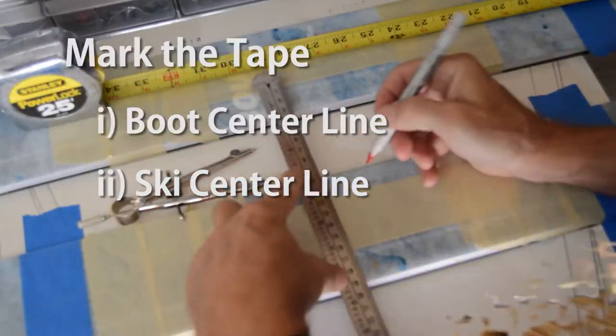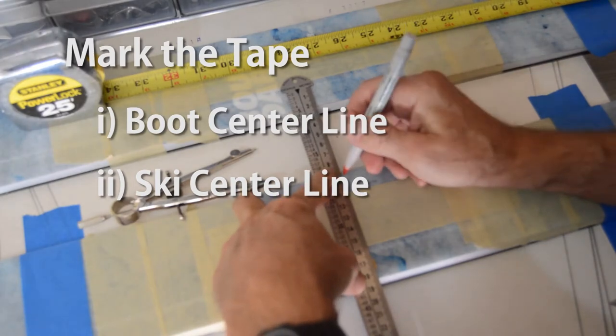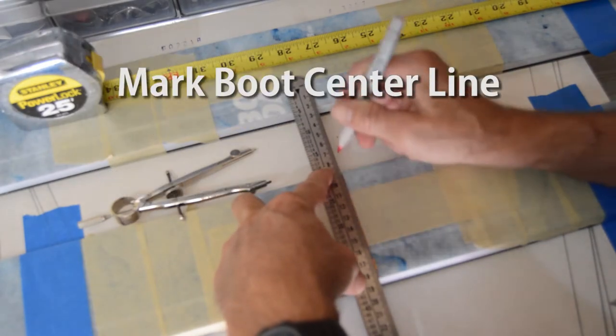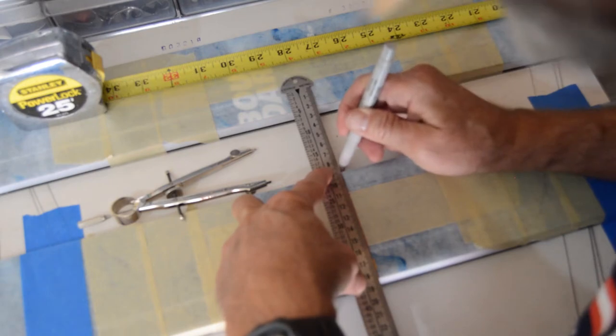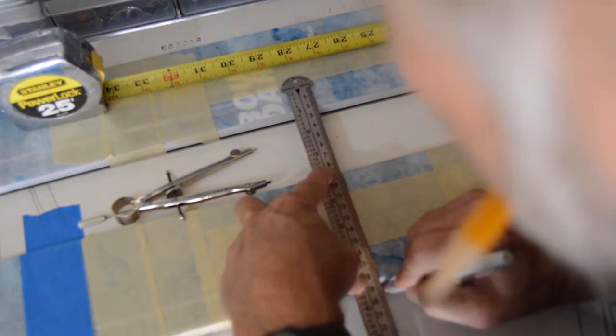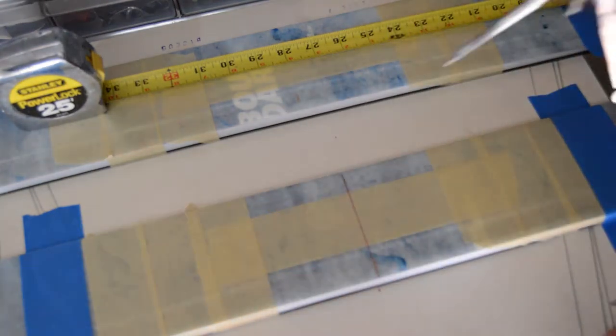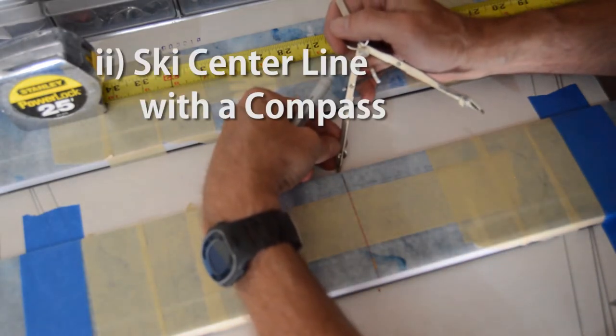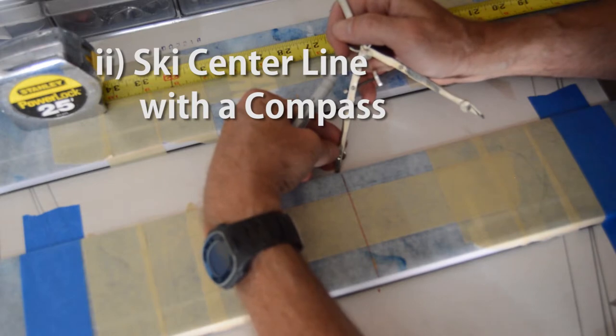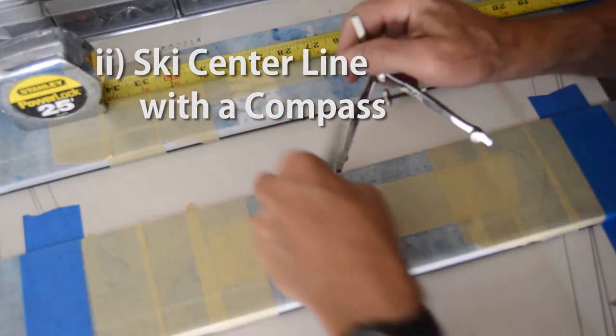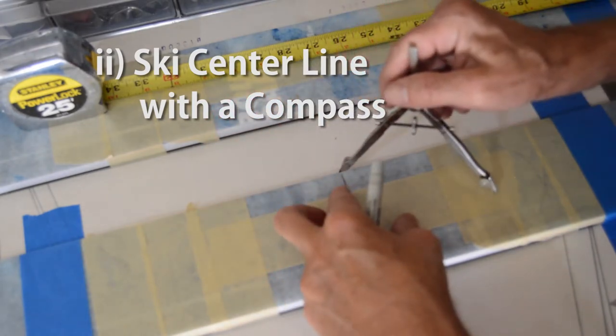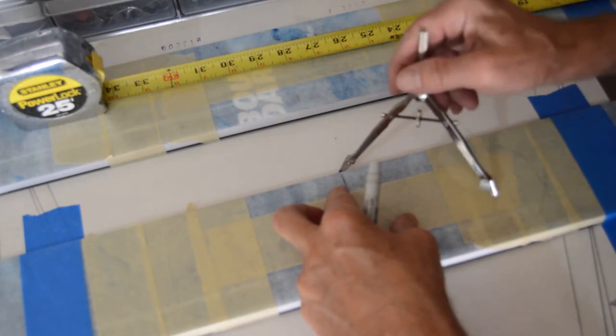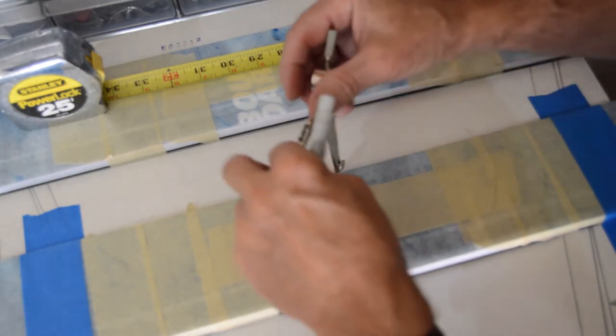I'll suggest two ways to mark the center line. First you can do it with a compass. This is relatively simple but requires some precision in where you locate the end of the compass. It's got to be right at the ski edge along what you described as the ski boot center line wherever you're going to put it.